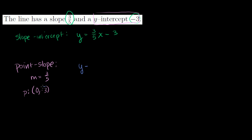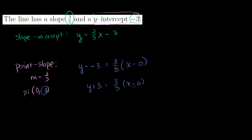So in point-slope form: y minus negative 3 equals 3 fifths times x minus 0, which simplifies to y plus 3 equals 3 fifths times x. It's a bit silly to write x minus 0, so we write y plus 3 equals 3 fifths x. To get back to slope-intercept form, just subtract 3 from both sides — these two forms are equivalent in what they represent.